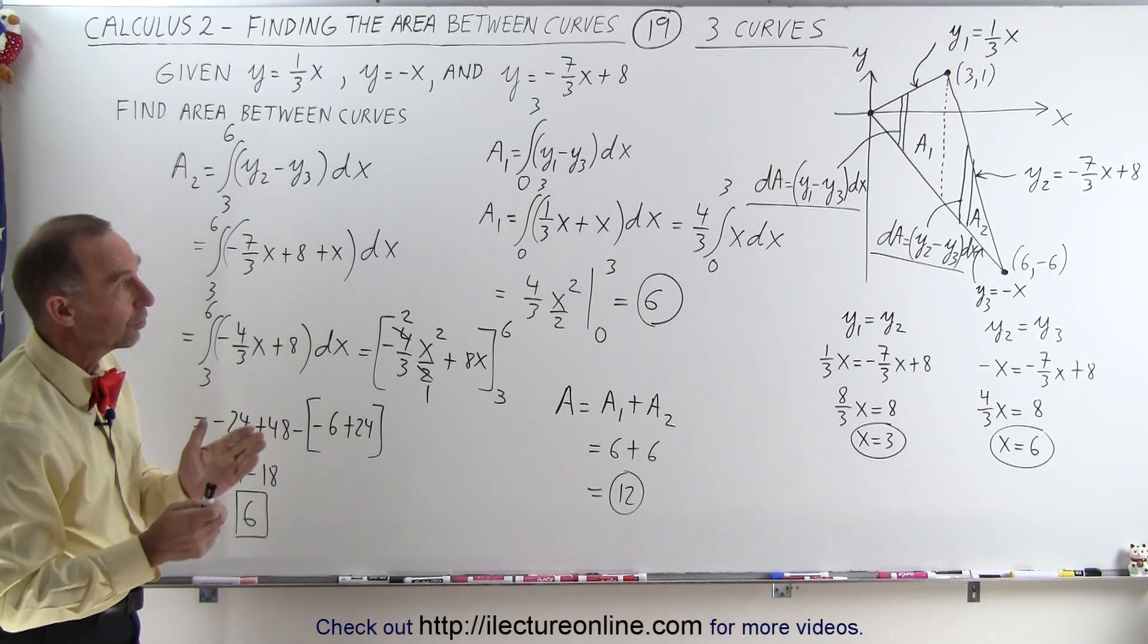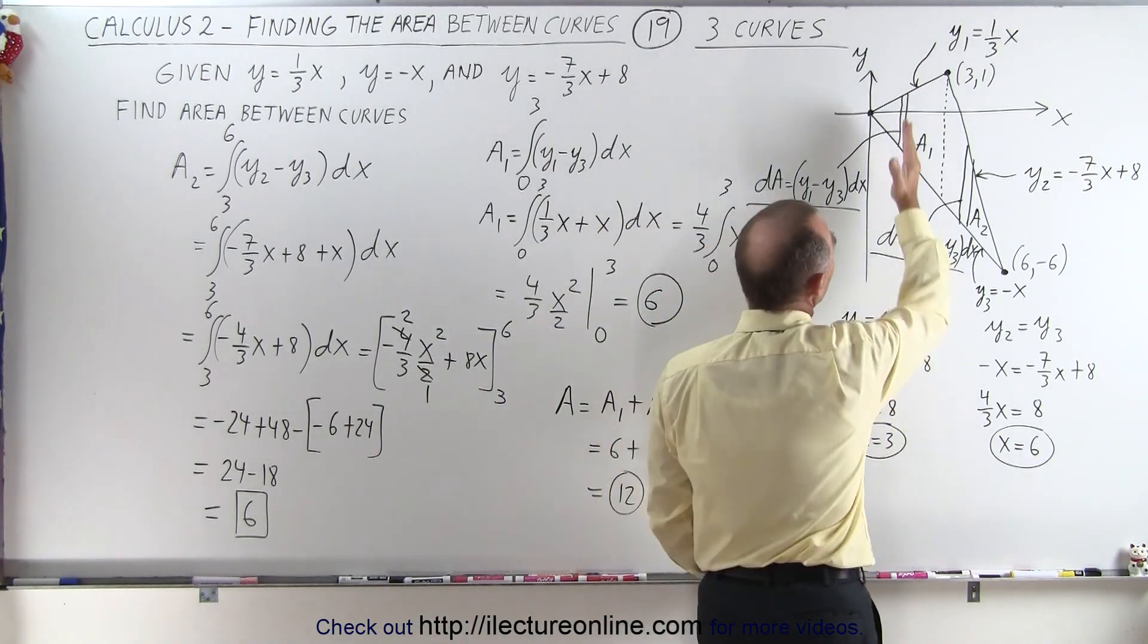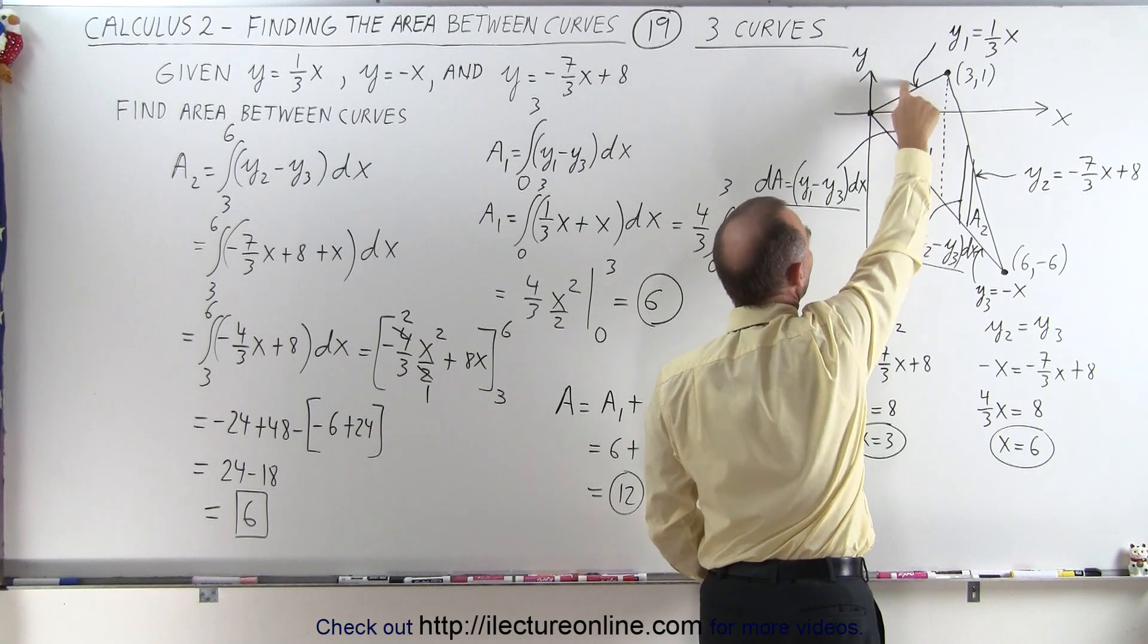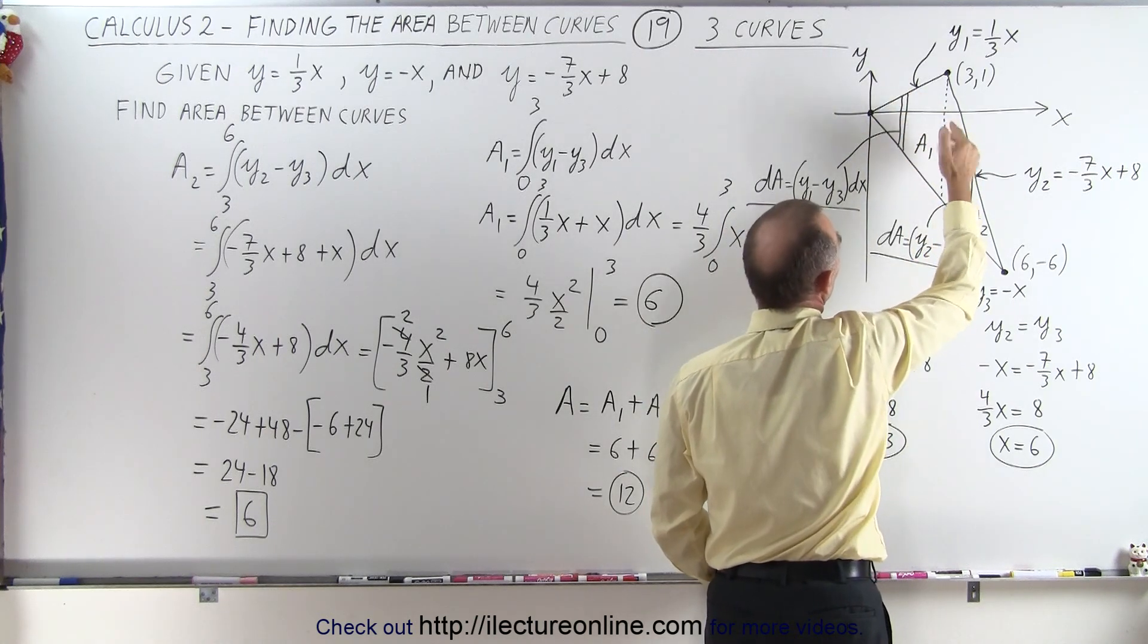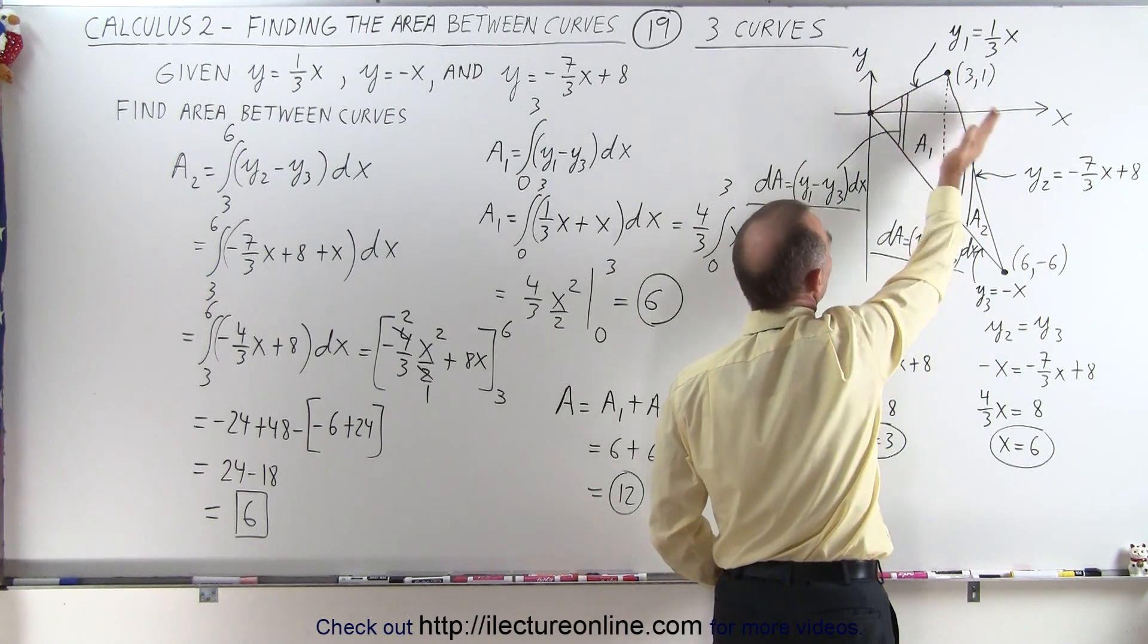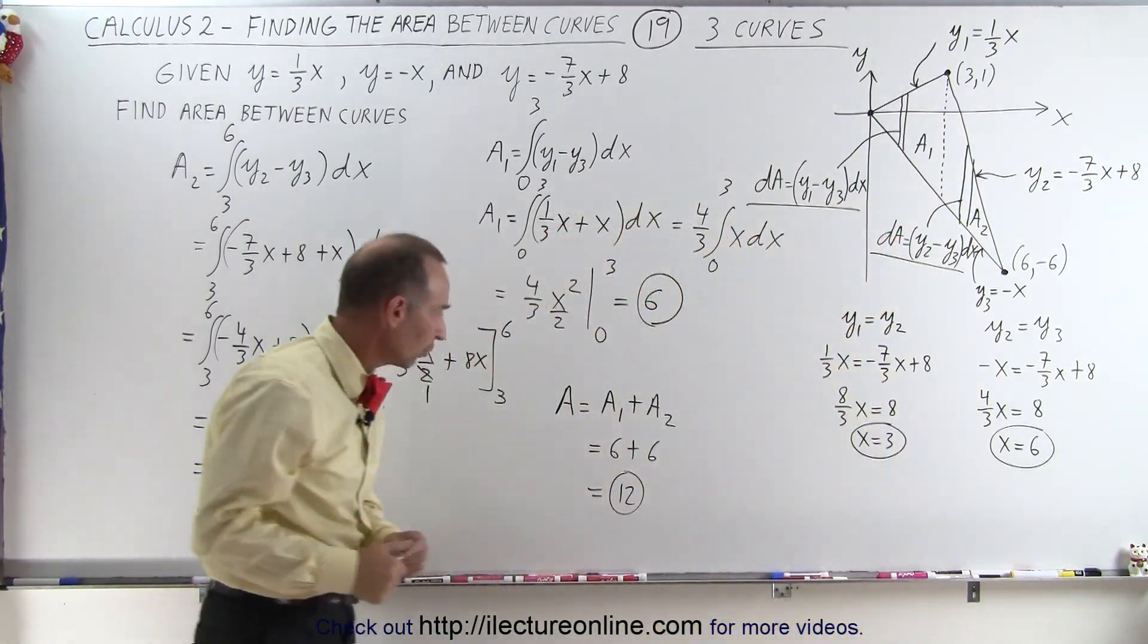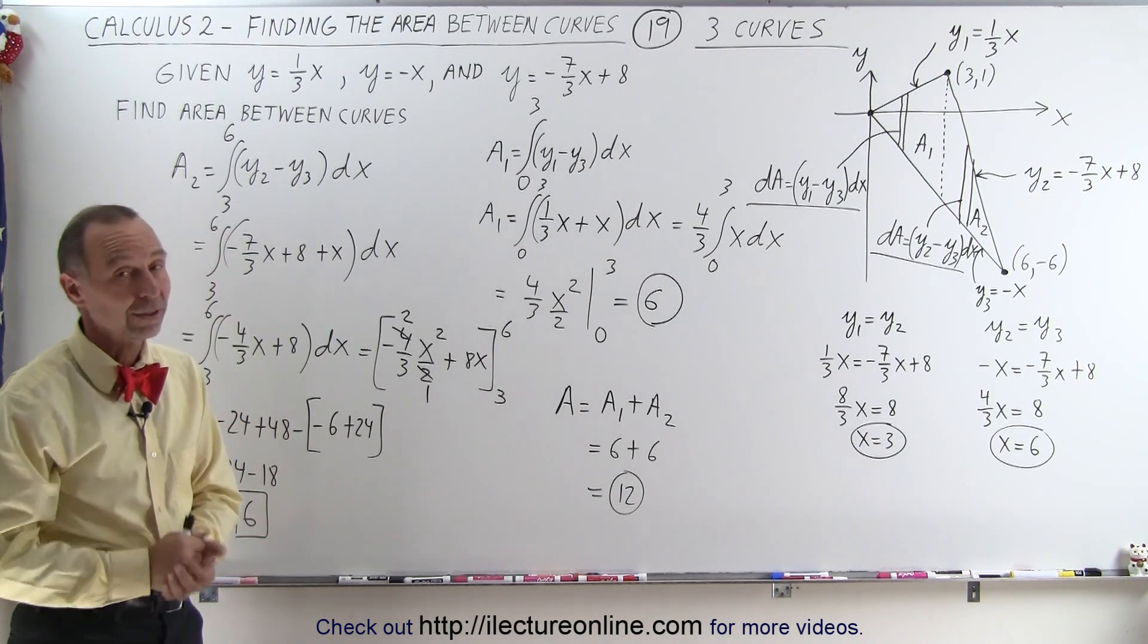Now again, notice that you always want to set up your partitioning in such a way that the area element, dA, always has the same function at the top as at the bottom. Of course, if you set your dA in the horizontal direction, you want the same limits from left to right. We could have done that, we could have separated this from here, but it seemed like it was easier to do it like this. And so that's why I chose to do it that way. It makes it for easier integrals. And that's how it's done.